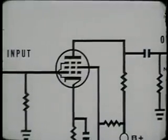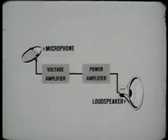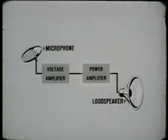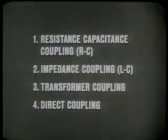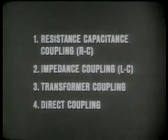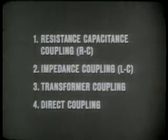For voltage amplification, the most common choice of tubes is the pentode. There are four general methods for coupling the output of an amplifier stage to a following stage or to a load. They are resistance-capacitance, impedance, transformer, and direct coupling. Each method has its own particular advantages and disadvantages and therefore is employed in circuits where its advantages can best be put to use.